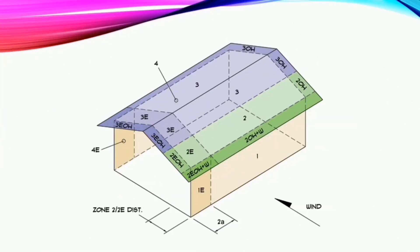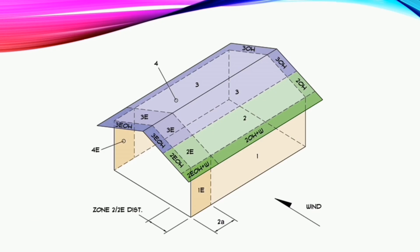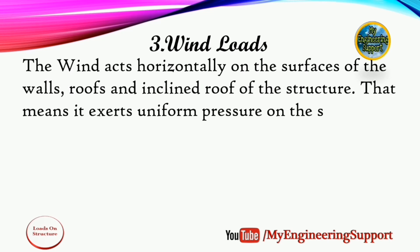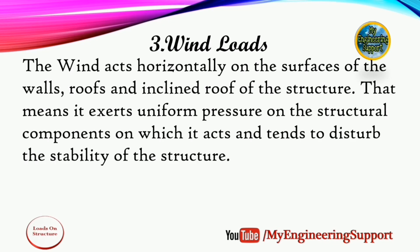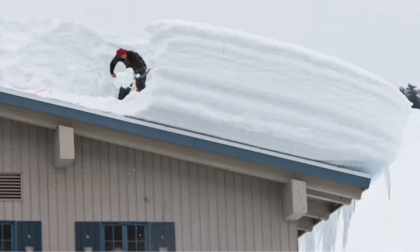تیسرا load ہوتا ہے structure پر wind load، یعنی ہوا کا load۔ یہ load structure میں walls، roof اور inclined roof میں horizontally apply ہوتا ہے۔ اگر یہ wind load structural component پر uniform رہے تو pressure کے باعث یہ tense ہو کر structure کی stability کو disturb کرتے ہیں۔ Wind کی value کچھ factors پر depend کرتی ہے جیسے structure کی geographical location، structure کی height اور wind flow کی duration۔